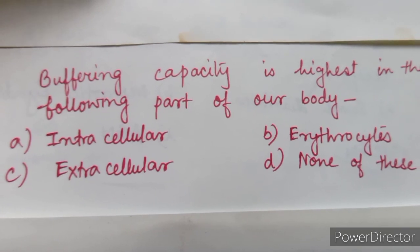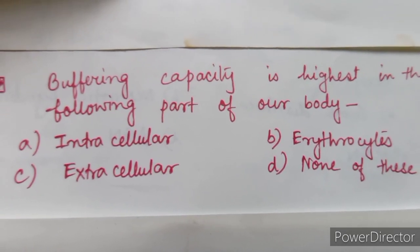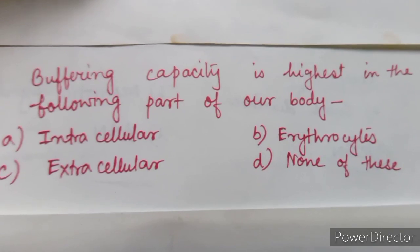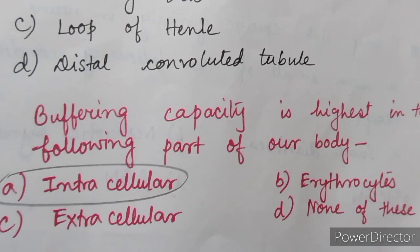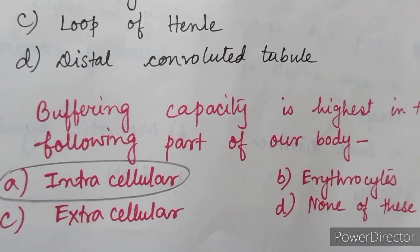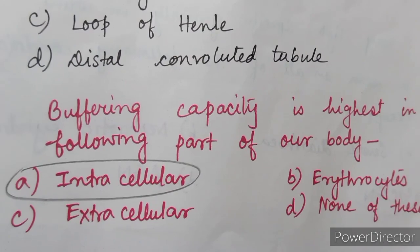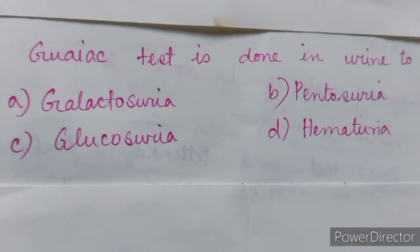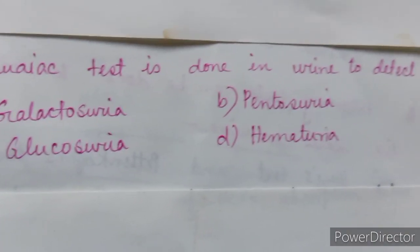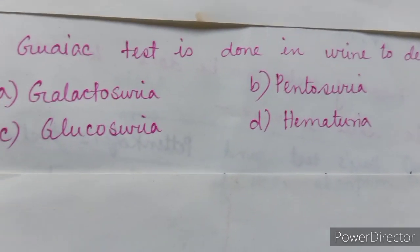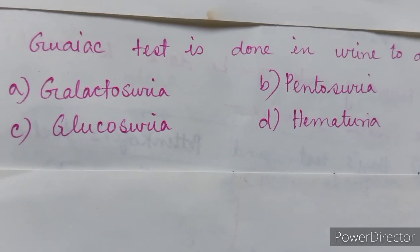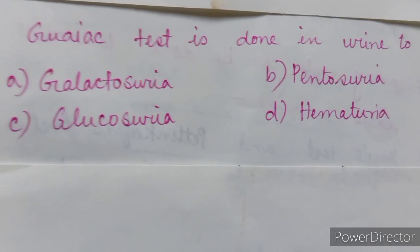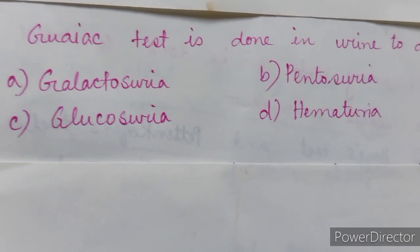Next question: buffering capacity is highest in which of the following parts of our body? Option A: intracellular, option B: erythrocytes, option C: extracellular, option D: none of these. The correct answer is option A: intracellular.